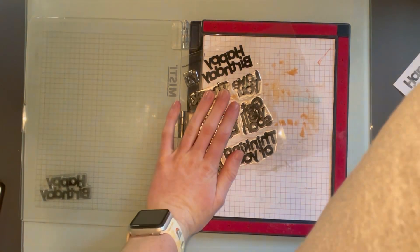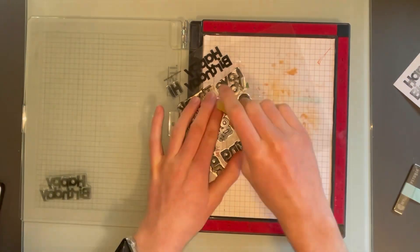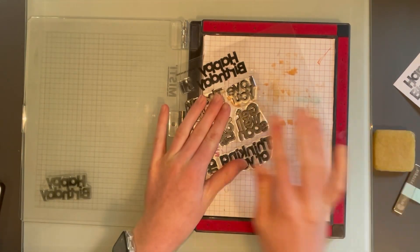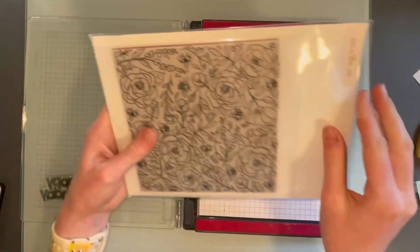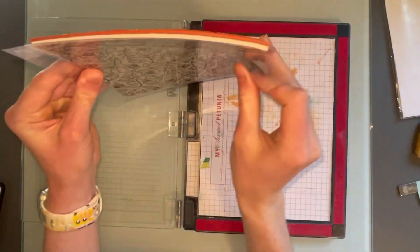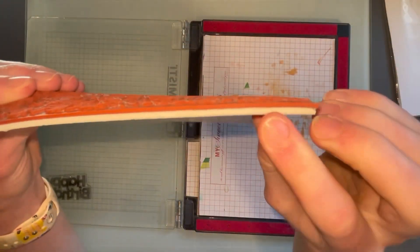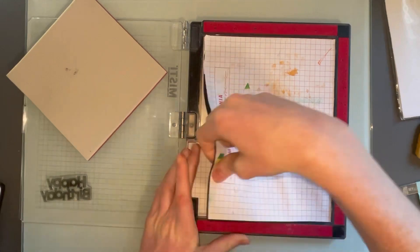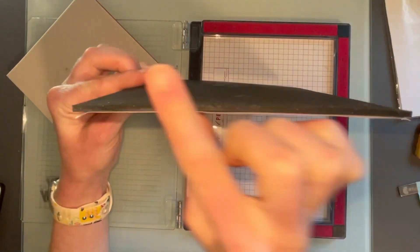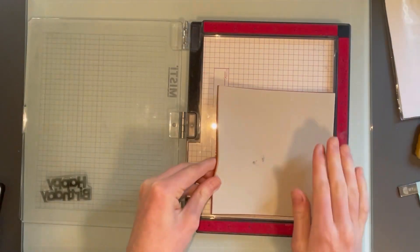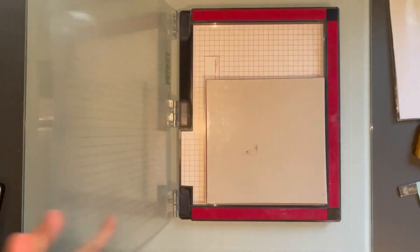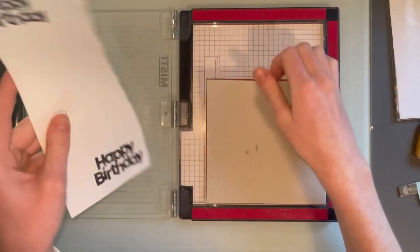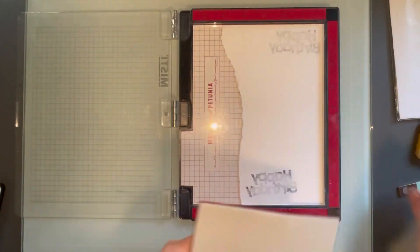I'm using the Simon Says Stamp Big and Bold Sentiments today. This is a clear stamp. Clear stamps are made out of photopolymer and they are clear, as the name would imply. To get them started, you just have to rub them because they have a coating on them when you first get them. You can do that with an adhesive eraser as well, which is really cheap and has more than just the use of getting the coating off the stamps. Then it will stamp perfectly.